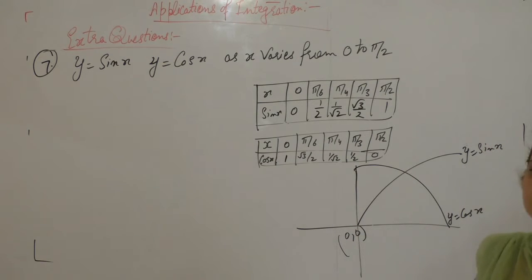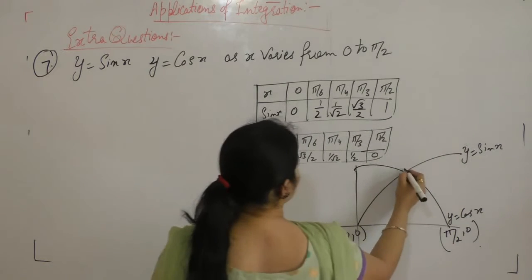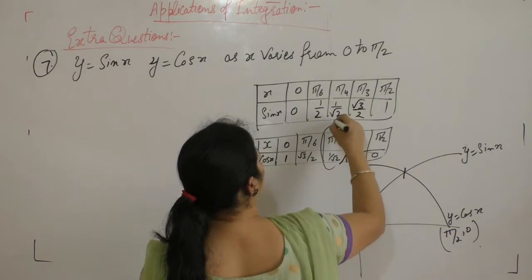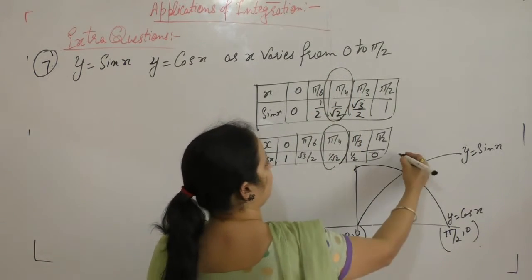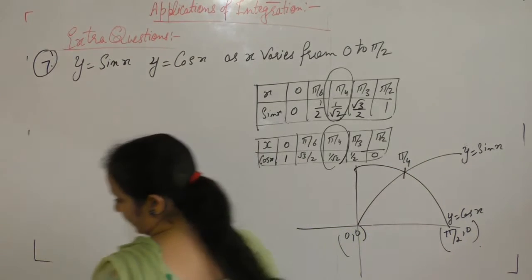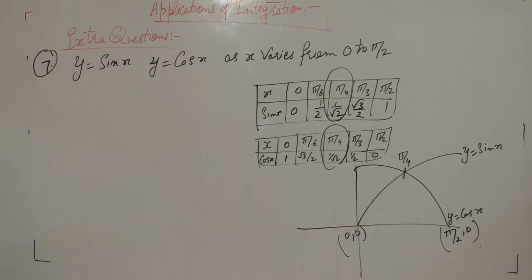At x 0, sin x is 0 and cos x is 0 at π by 2. Now this is the point where these two lines intersect. This is the common point, π by 4. At π by 4, these two lines intersect.